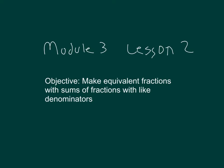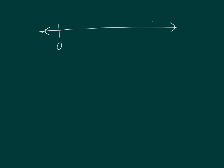Here we'll make equivalent fractions with sums of fractions with like denominators. Here I have a number line. I'm going to label the endpoints 0 and 1. In between my two endpoints, I'm going to go ahead and divide it into thirds. So I have 1 third and 2 thirds.